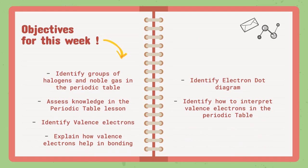As for this week's objectives, as I said before, we still have one objective left from the second lesson, which is the periodic table. We are going to identify groups of halogens and noble gases in the periodic table.